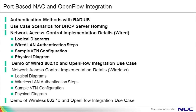Here we'll cover our 802.1X and OpenFlow integration scenario in six steps. This first video shall cover the first four bullets illustrated in bold. We'll start by discussing different authentication methods available with RADIUS so you can plan your RADIUS deployment. Next, we'll go over different use case scenarios for DHCP server homing. We'll cover the network access control implementation details for the wired scenario, including logical diagrams, the wired LAN authentication steps, a sample VTN configuration, and a physical diagram. We'll conclude with a demo of the wired 802.1X and OpenFlow integration use case, and follow up with a wireless use case video.